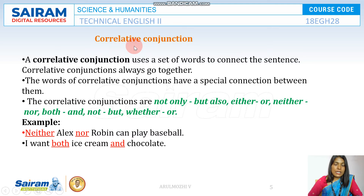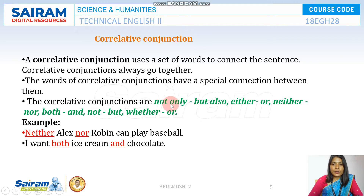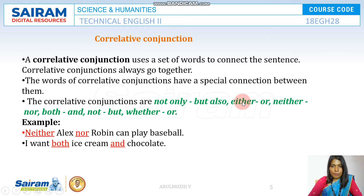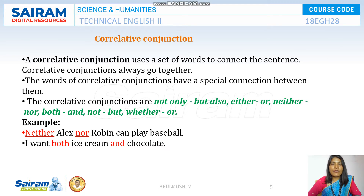Co-relative conjunctions cannot stand alone — they always go together. For example, "not only...but also": "He is not only a brilliant person but also handsome" or "He is not only hardworking but also a helping-minded person." "Either...or": "I either want to eat apple or banana." It can also connect two sentences: "I either want to watch a movie or I want to go to play."